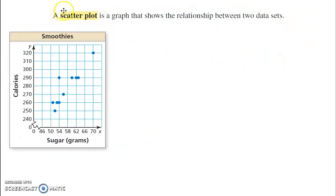Alright, a scatterplot is a graph that shows the relationship between two data sets. So, for example, here. This shows, this has plotted different smoothies, ten different smoothies, the amount of sugar and the amount of calories. Okay, so now you might have questions about this. We're comparing two sets of data, sugar versus calories, here.